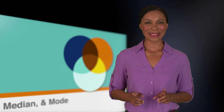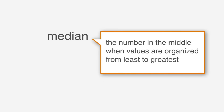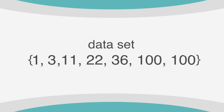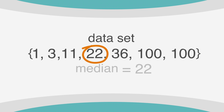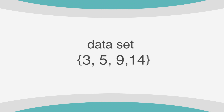What's even better is finding the median. The median is the number in the middle when values are organized from least to greatest. Our set is already organized from least to greatest, and since we have 7 terms, the fourth term will be the one in the middle. Starting at 1, we count to the fourth term, which is 22. So the median for this data set is 22. When you have an odd number of terms in a set, the median is the middle number.